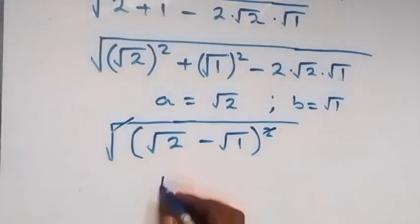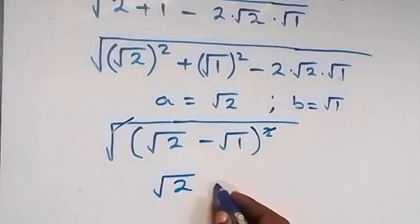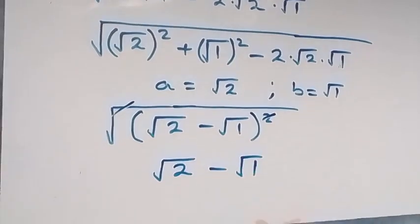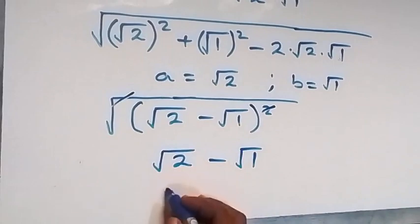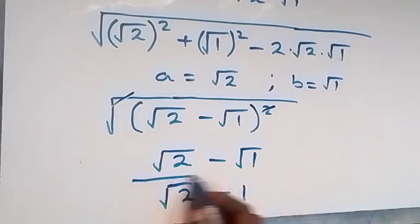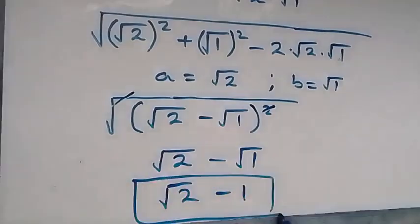Then what we have here become root 2 minus root 1. Since root 1 is 1, therefore here we have root 2 minus 1. So here we have the solution to this given problem, which means that what we have here